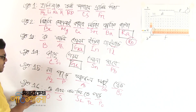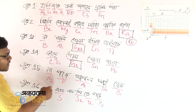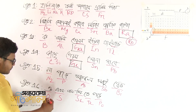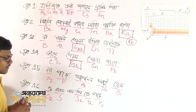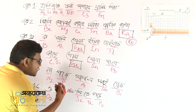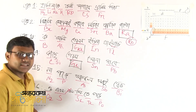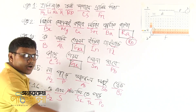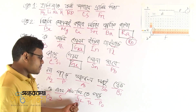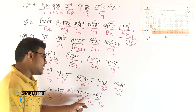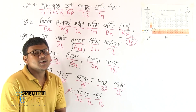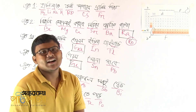Group 16 elements include oxygen (O), sulfur (S), selenium (Se), tellurium (Te), and polonium (Po).